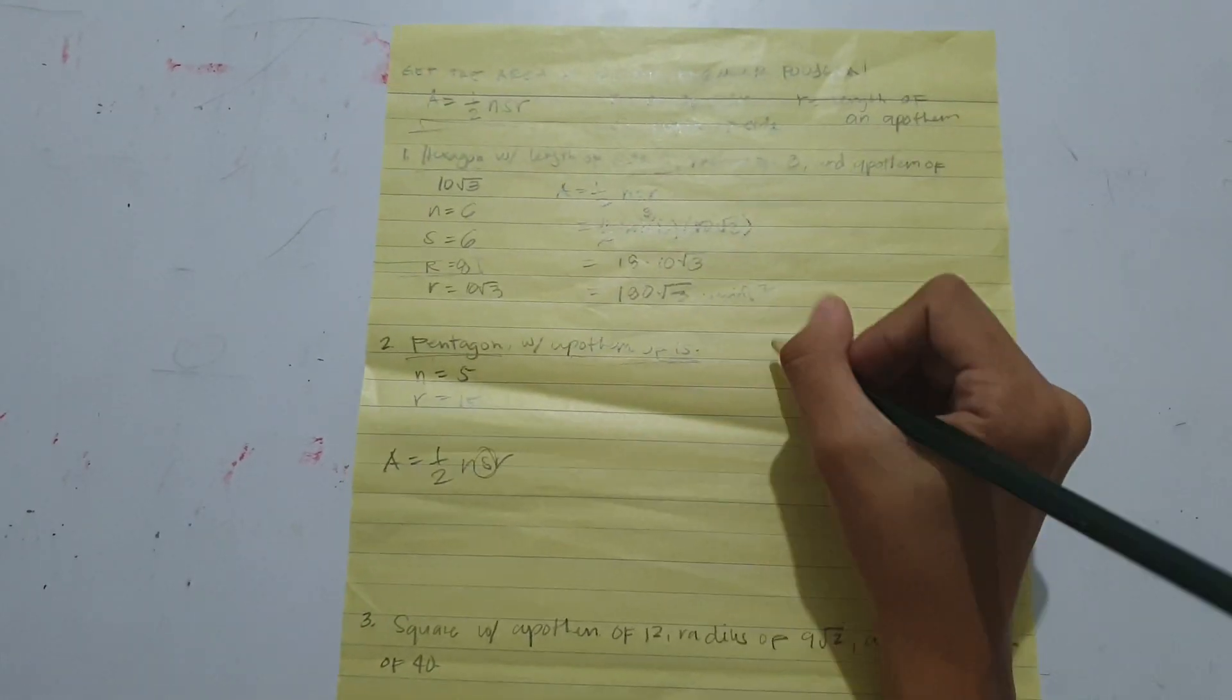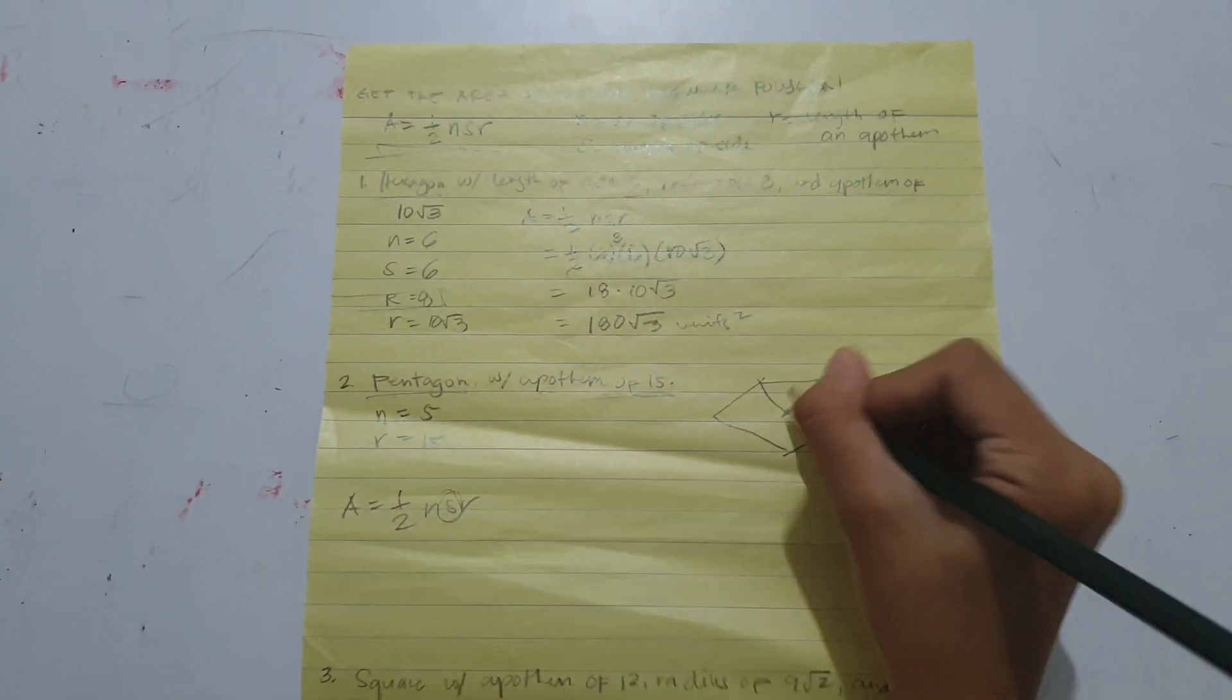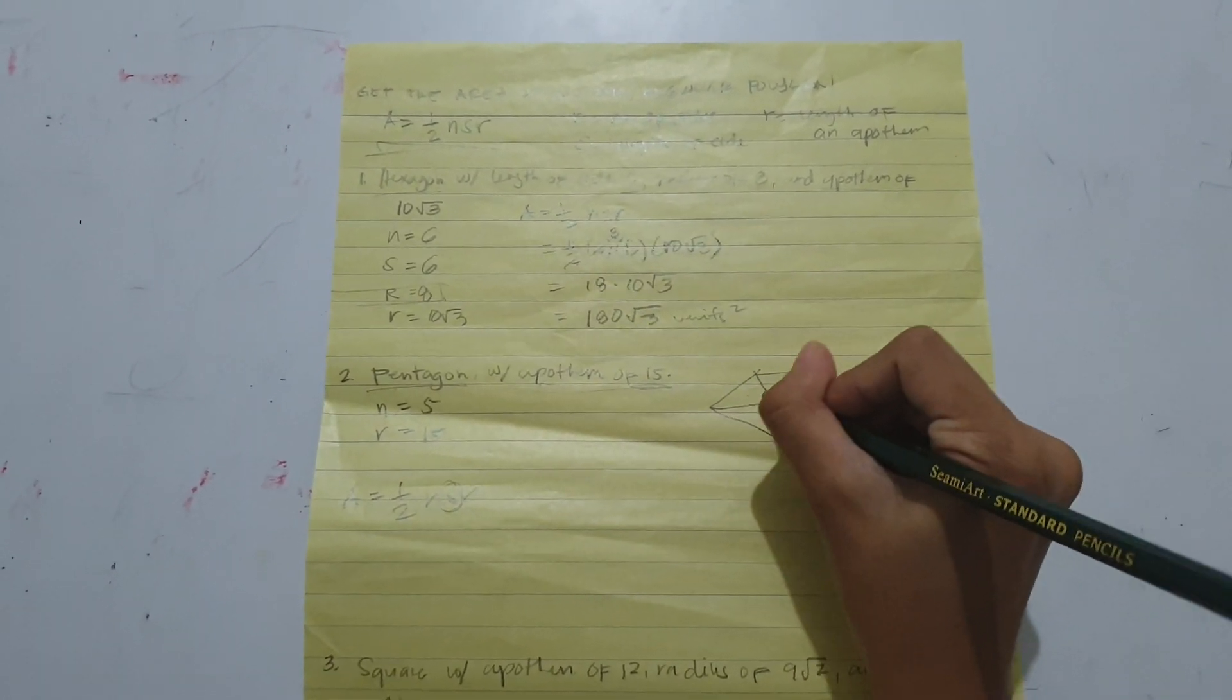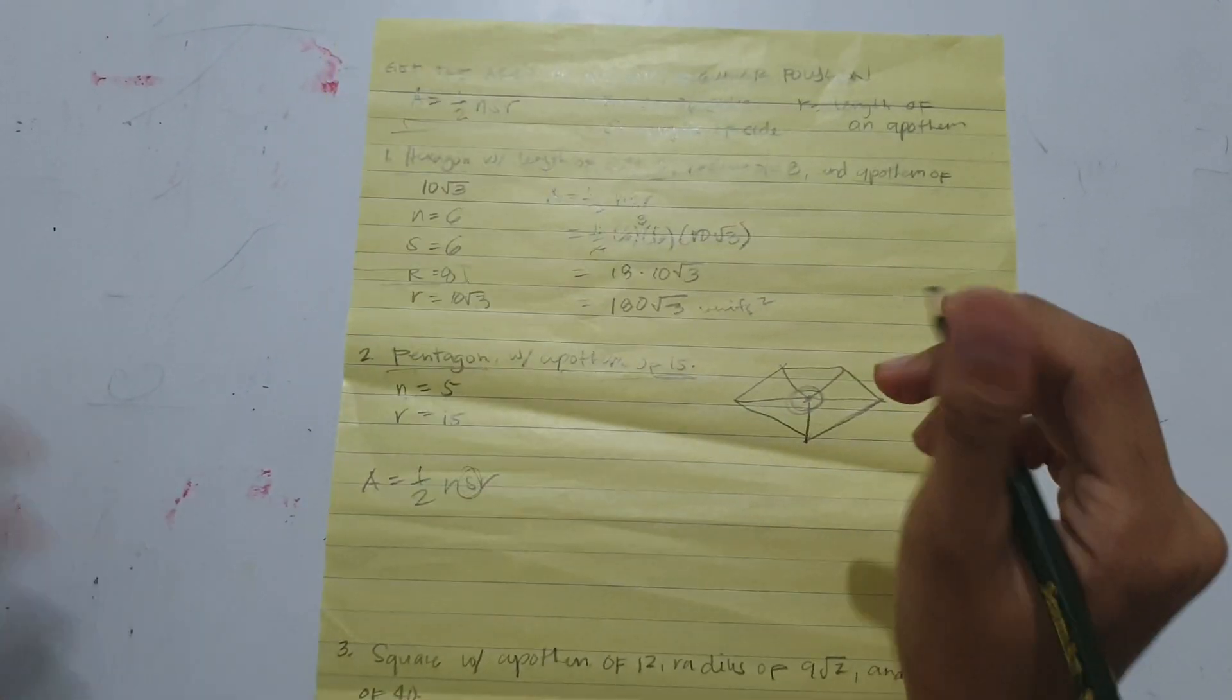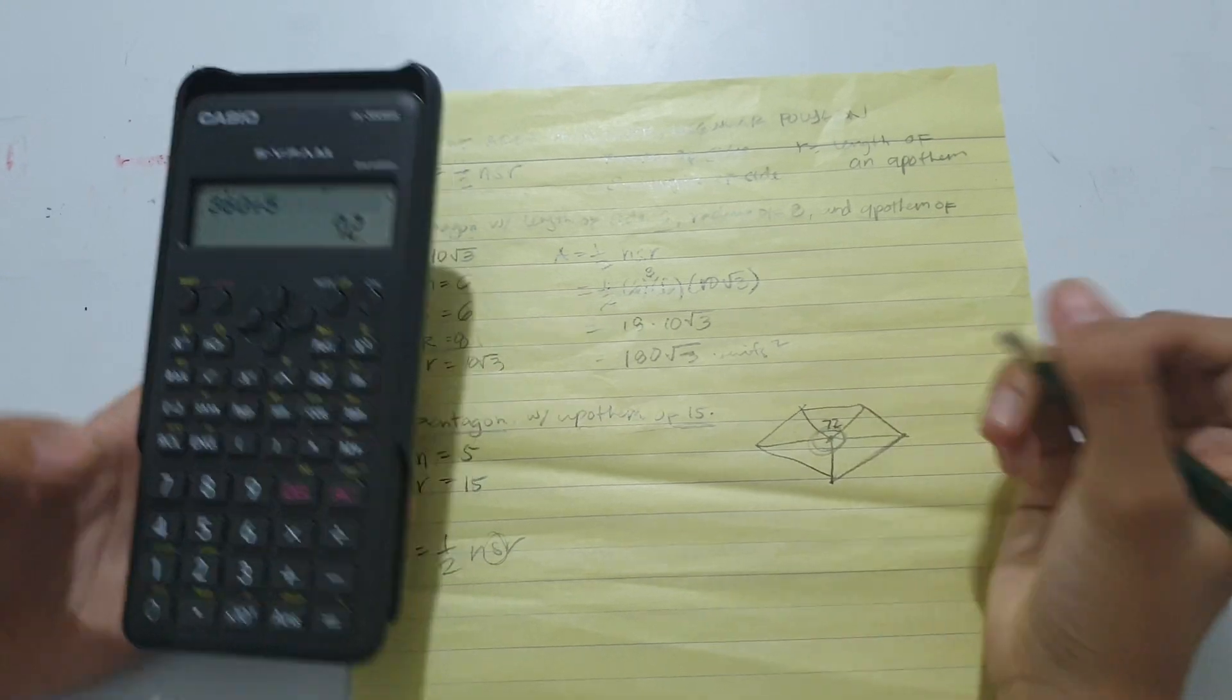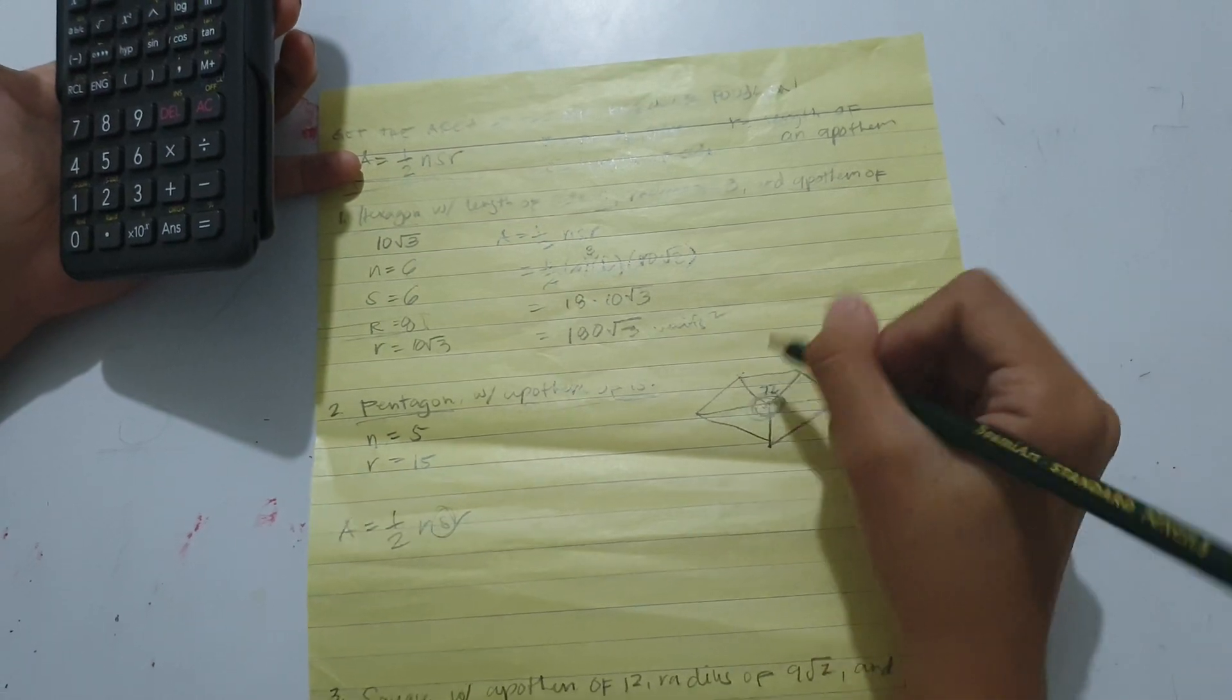Imagine a pentagon has five equal triangles. Get this angle. This will always be 360 degrees, so 360 divided by five. That would be 72 degrees each. And since this is a regular polygon, all of these angles are equal. Now that we have the triangle,